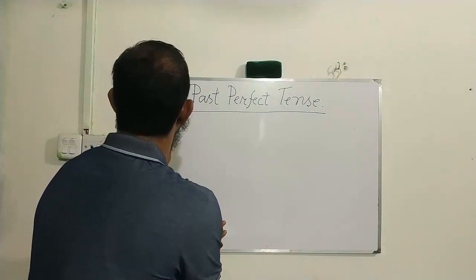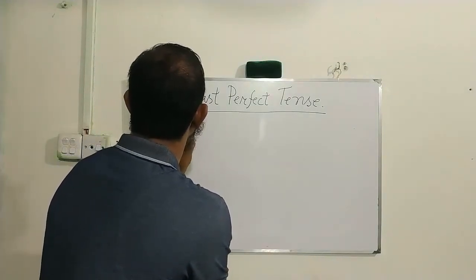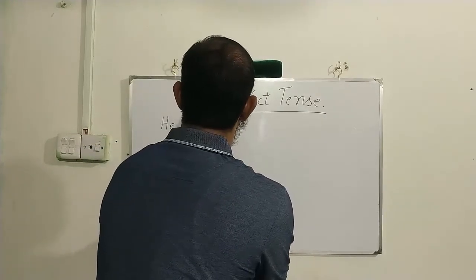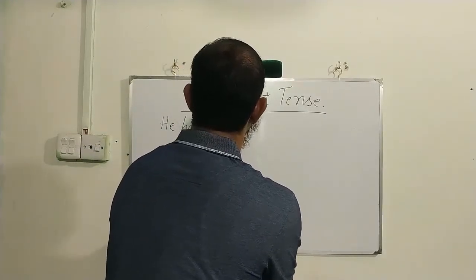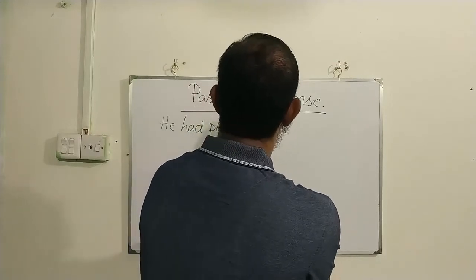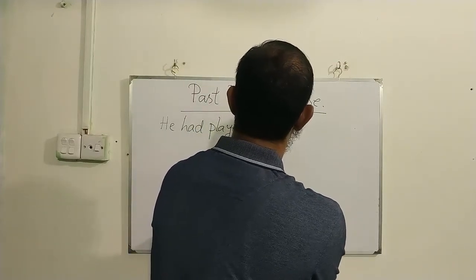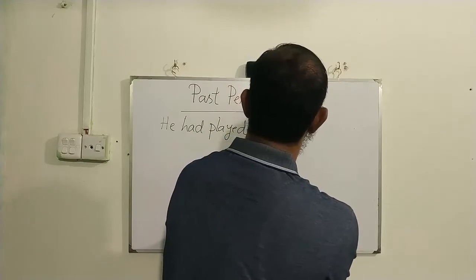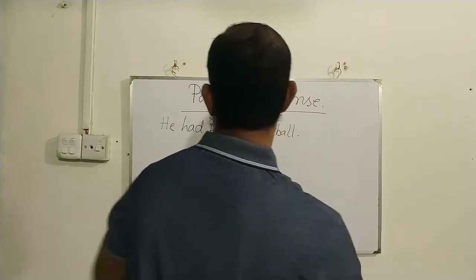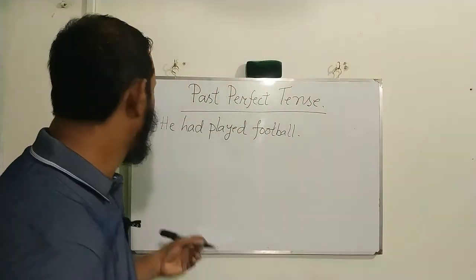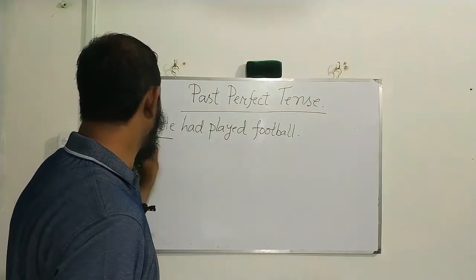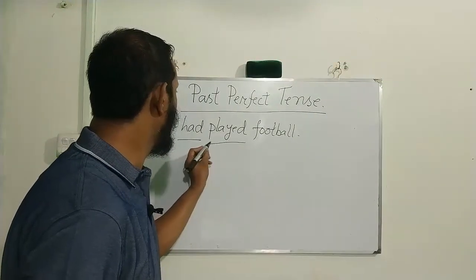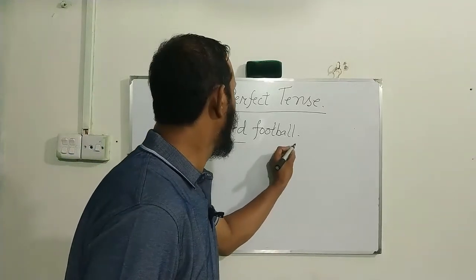This example is: had played football. So the structure is: Subject + had + verb in past participle form + object.